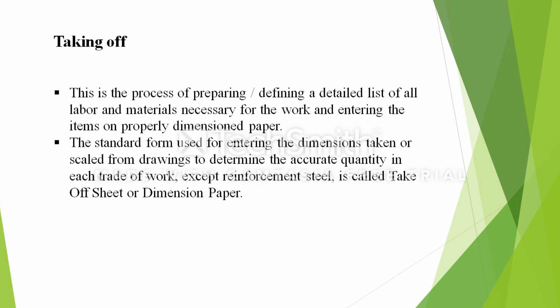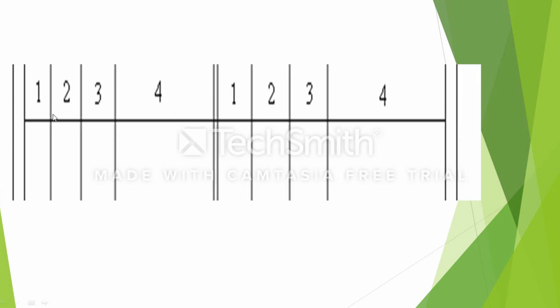If you increase the unit price, the bill of quantity amount will change. Take-off is the quantity of quantity. The amount you use relates to the size — if you have the same size, it will be in square meters. The take-off format allows you to click on the table and paste the table, and add the same size as well using Excel.